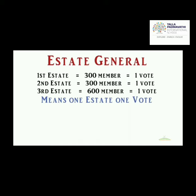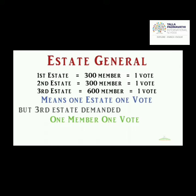But if we look at the third estate of 600 members — instead of getting two votes, the third estate had no right to two votes. Being 600 members, where 300 members get one vote, the 600 members should get two votes. But in the third estate we did not notice any such difference — they were also given only the power of a single vote.